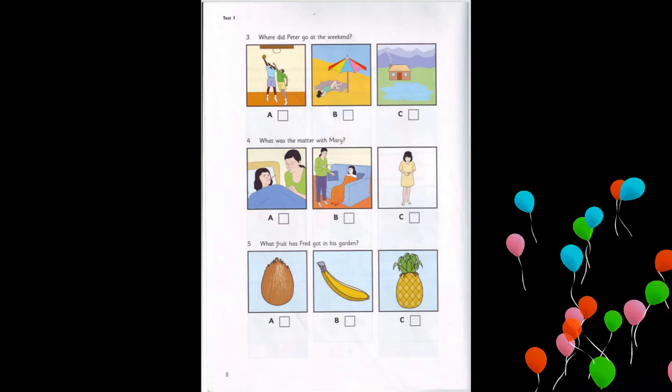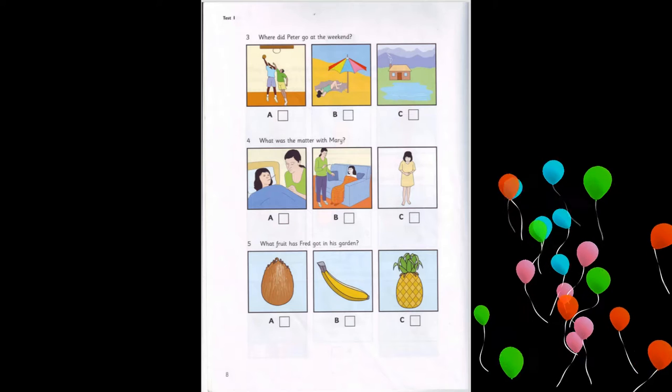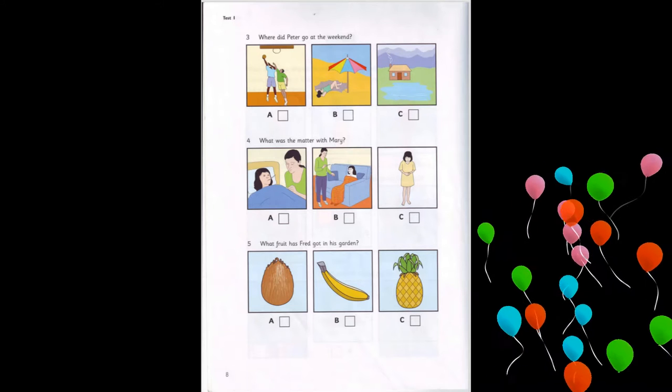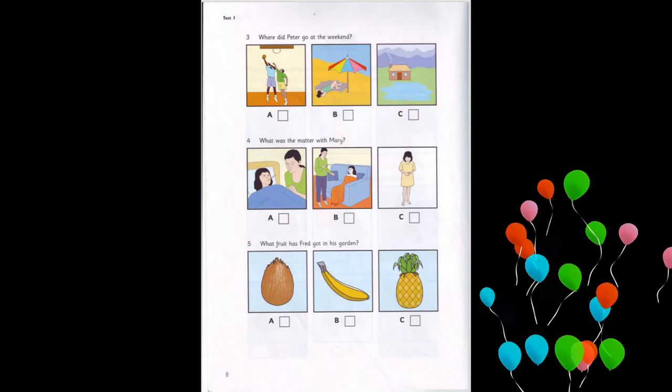She's got a new dress. Is it blue? No, it's yellow. Can you see the tick? Now you listen and tick the box.